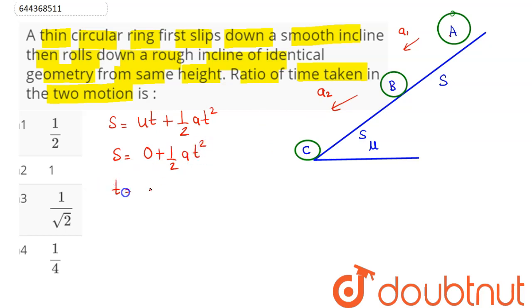Hence T will come out here as 2S divided by A, we can say as square root of this quantity. Now from A to B, acceleration A1 will be simply G sine theta. Whereas from B to C,